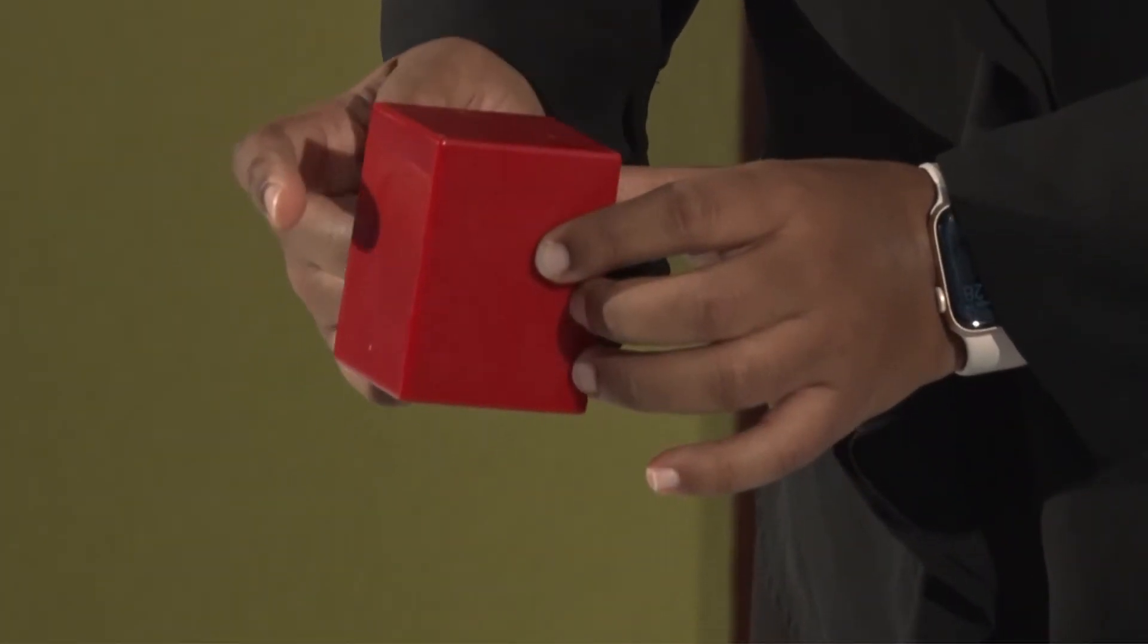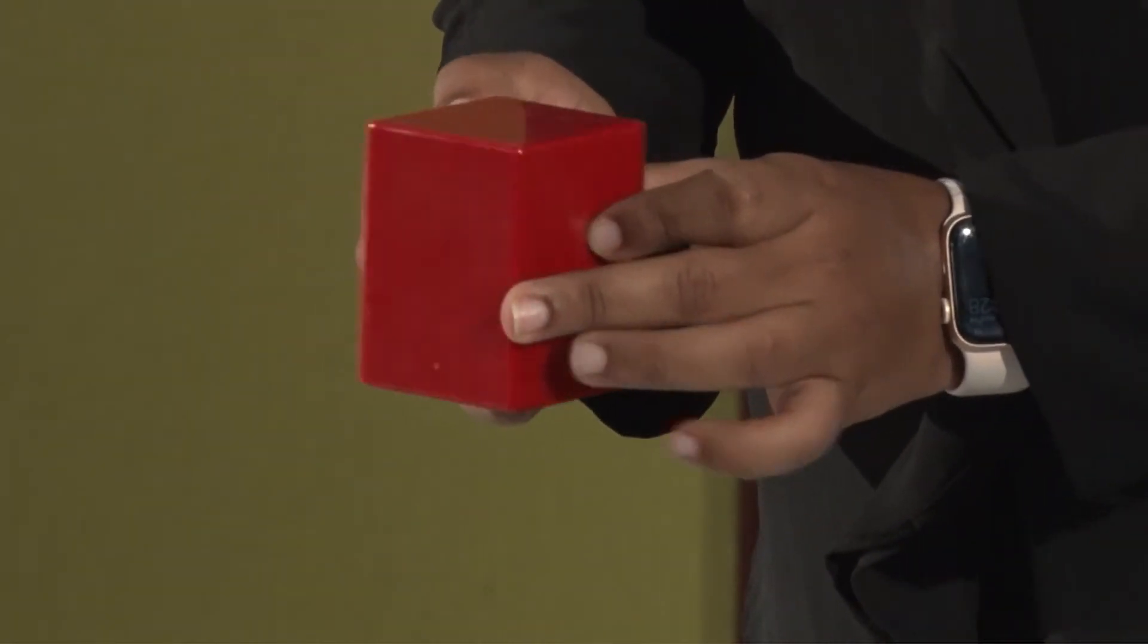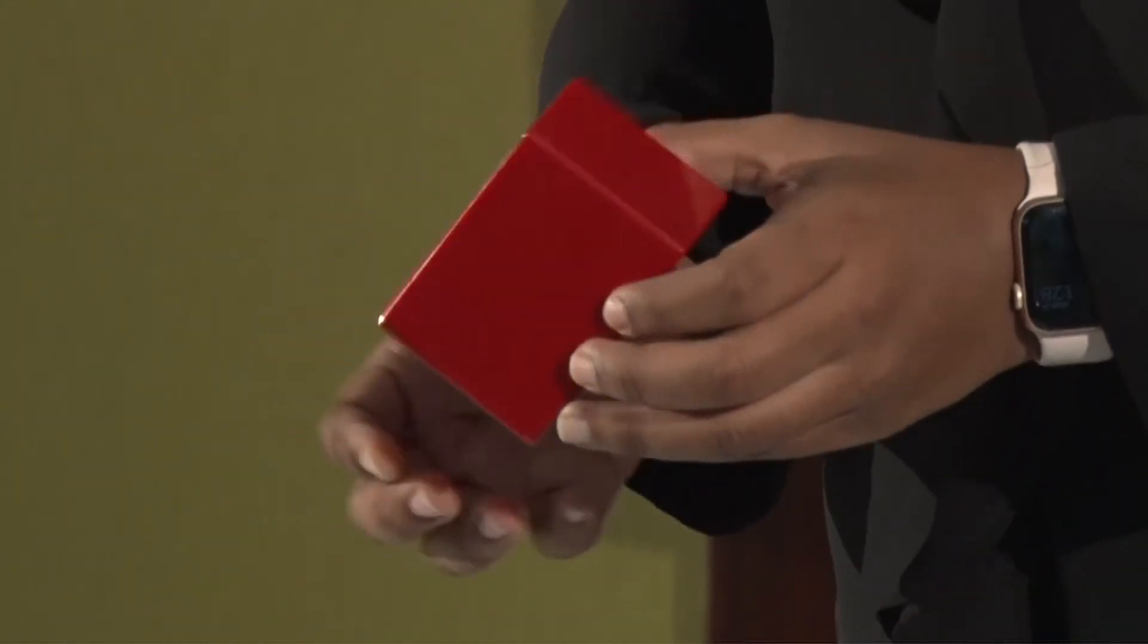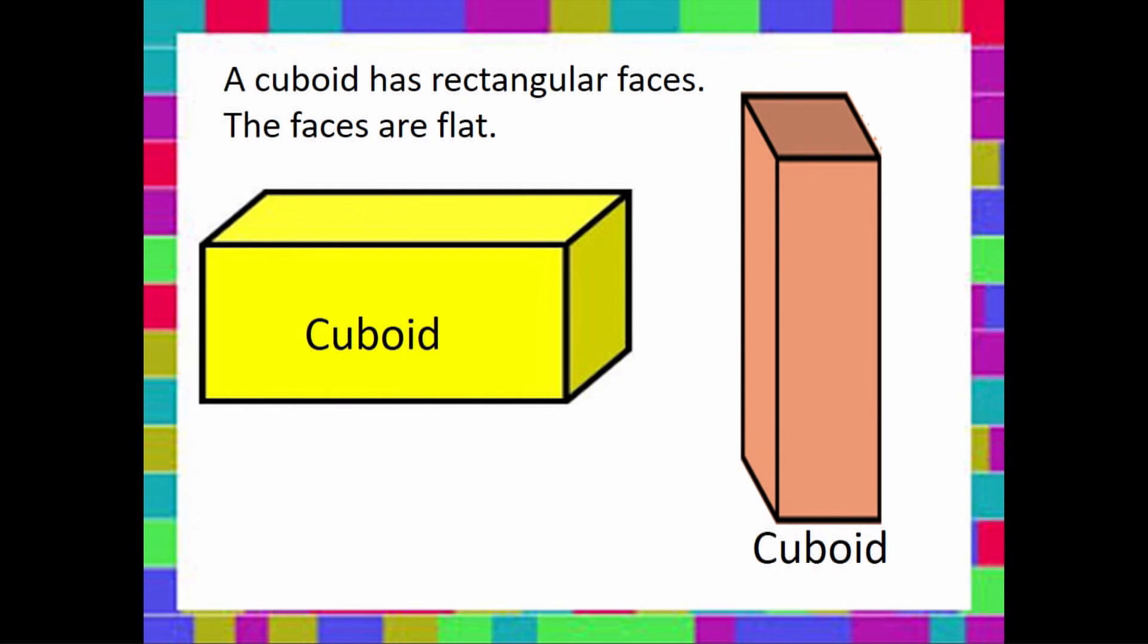And we have four—let's count together—one, two, three, four rectangular faces. Can you think of some things that look like a cuboid?